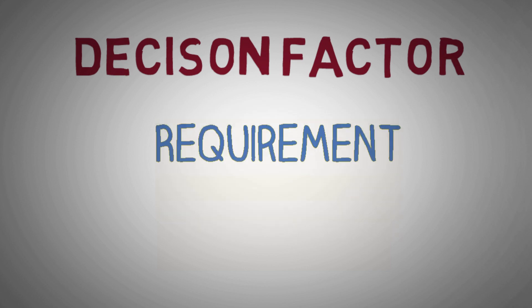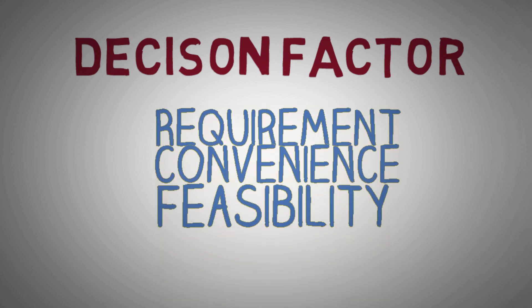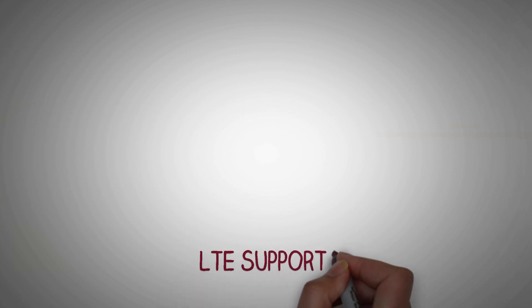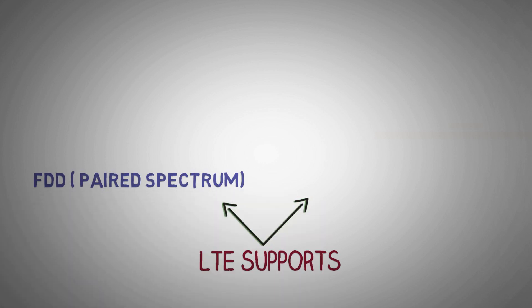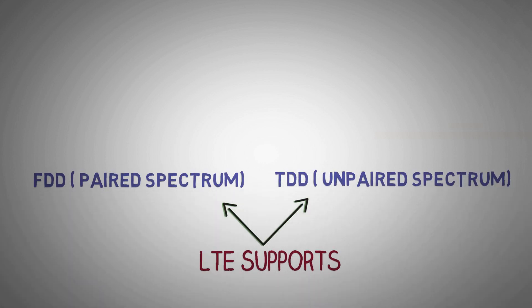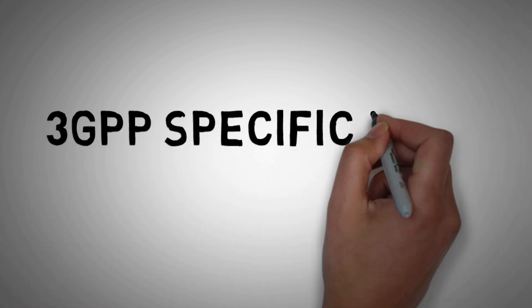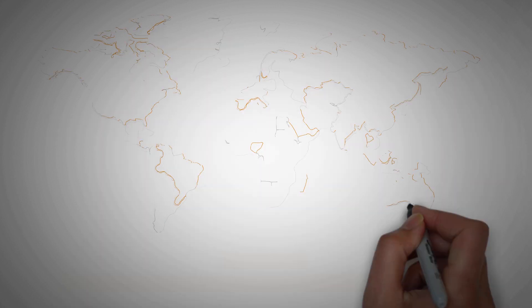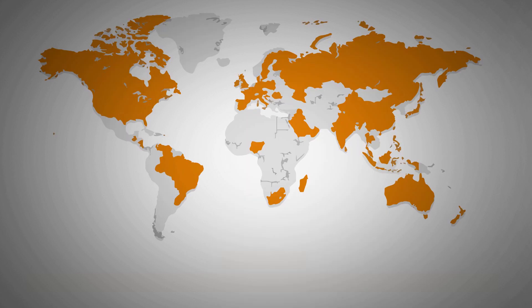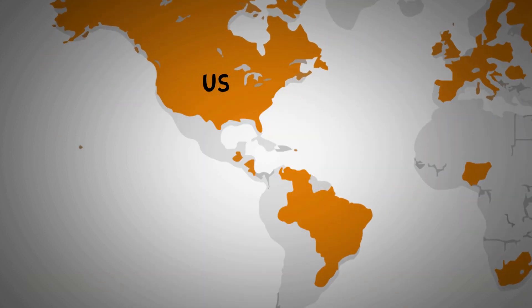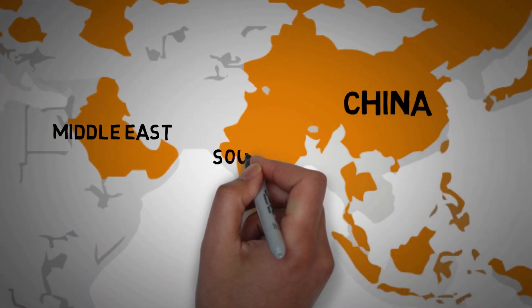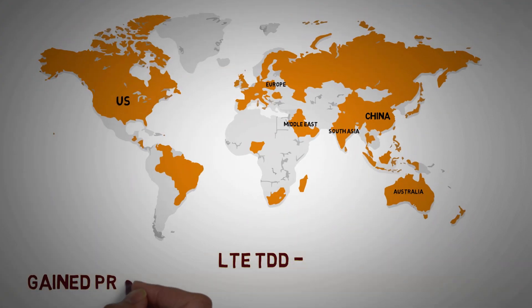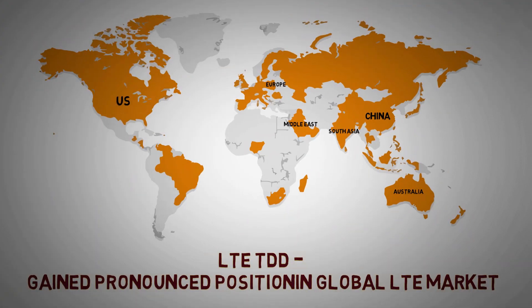As far as LTE is concerned, it is defined to support both paired spectrum for Frequency Division Duplex and unpaired spectrum for Time Division Duplex, with the same 3GPP specification (3GPP 36.847) for both duplexing methods. While the majority of the global LTE market is based on FDD technology, TDD is expected to see increased adoption in the US, China, Australia, Middle East, Northern and Eastern Europe, and Southwest Asia.